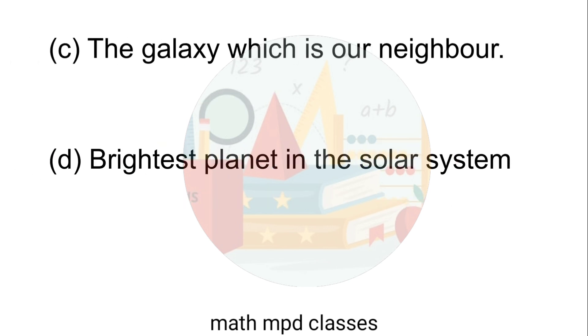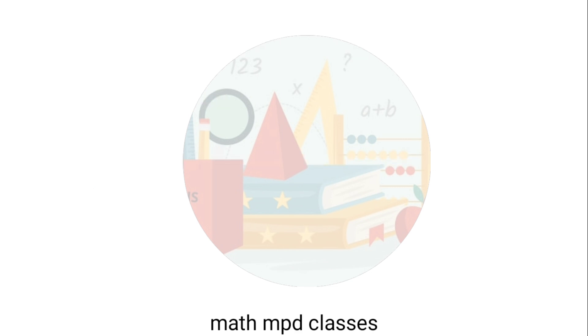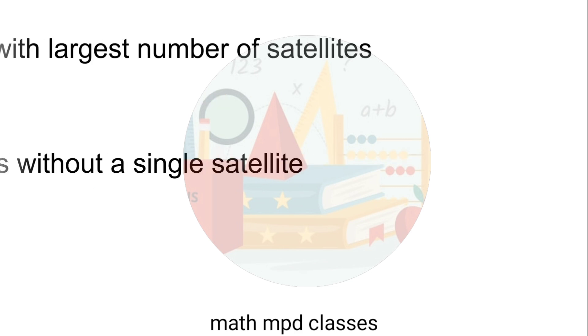The galaxy which is our neighbor — Answer: Andromeda. D. Brightest planet in the solar system — Answer: Venus.